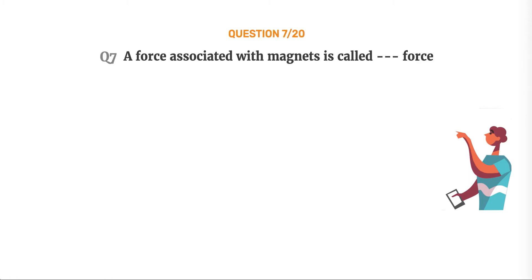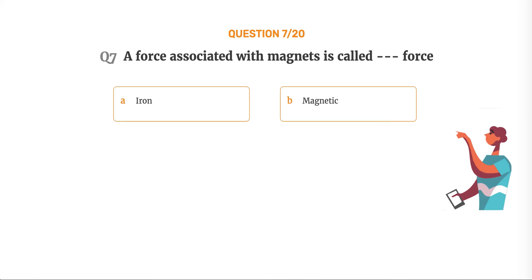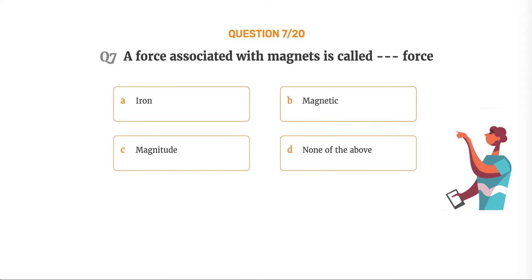Question number 7. A force associated with magnets is called blank force. Option A: Iron. Option B: Magnetic. Option C: Magnitude. Option D: None of the above.